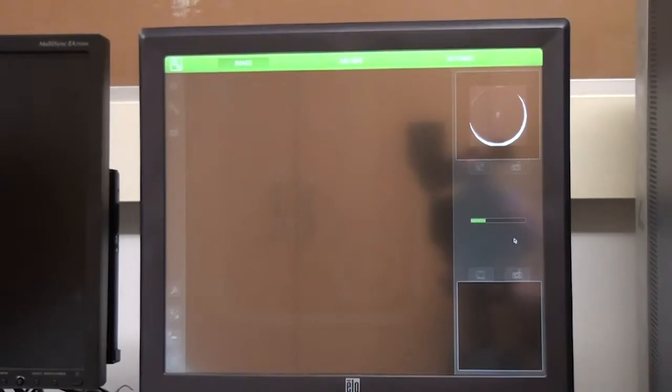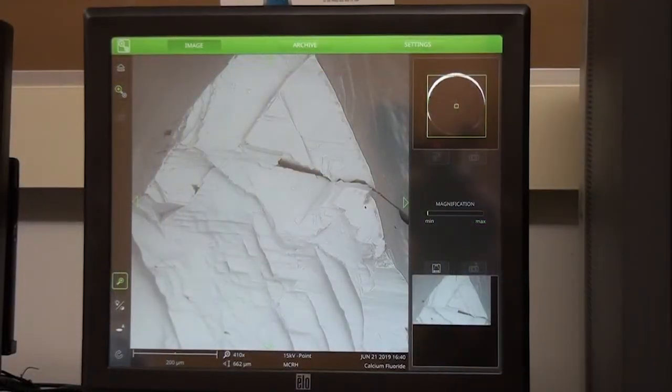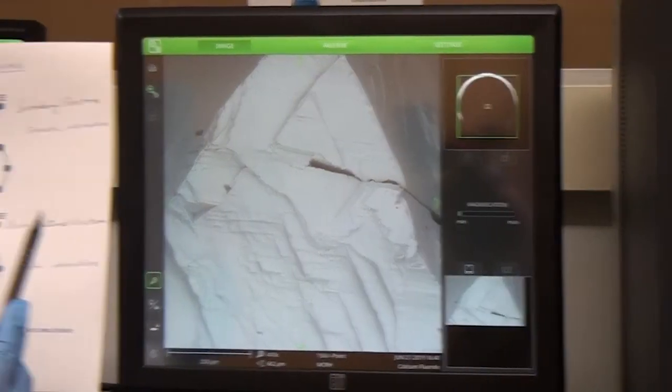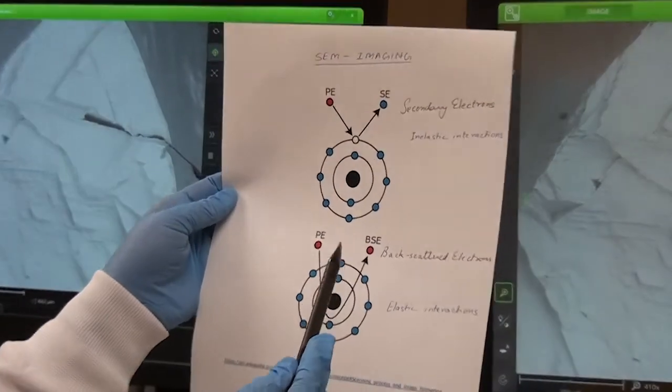The electron beam is scanning the sample, and as it hits the sample, several types of signals are generated. Let's look at this simple illustration.